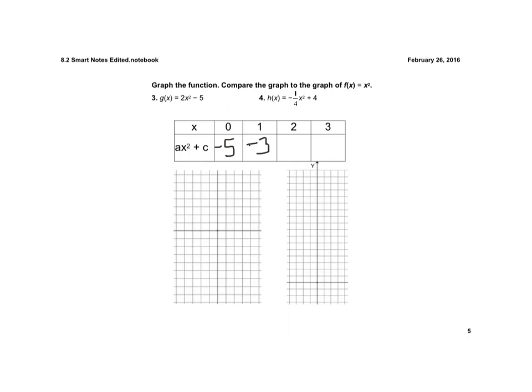Again, notice I'm using the correct order of operations. 2 squared is 4, 2 times 4 is 8, 8 minus 5 is 3.